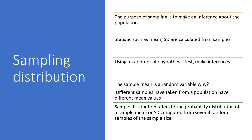The purpose of sampling is to make an inference about the population, but we are not in a position to collect the entire population, so we adopt sampling. We calculate the mean and standard deviation of the samples, and the assumption is that the sample mean and standard deviation are similar to those of the population. Using an appropriate hypothesis test, we make inferences. The hypothesis test states that findings from the sample can be generalized to the population — that is the significance of sampling.